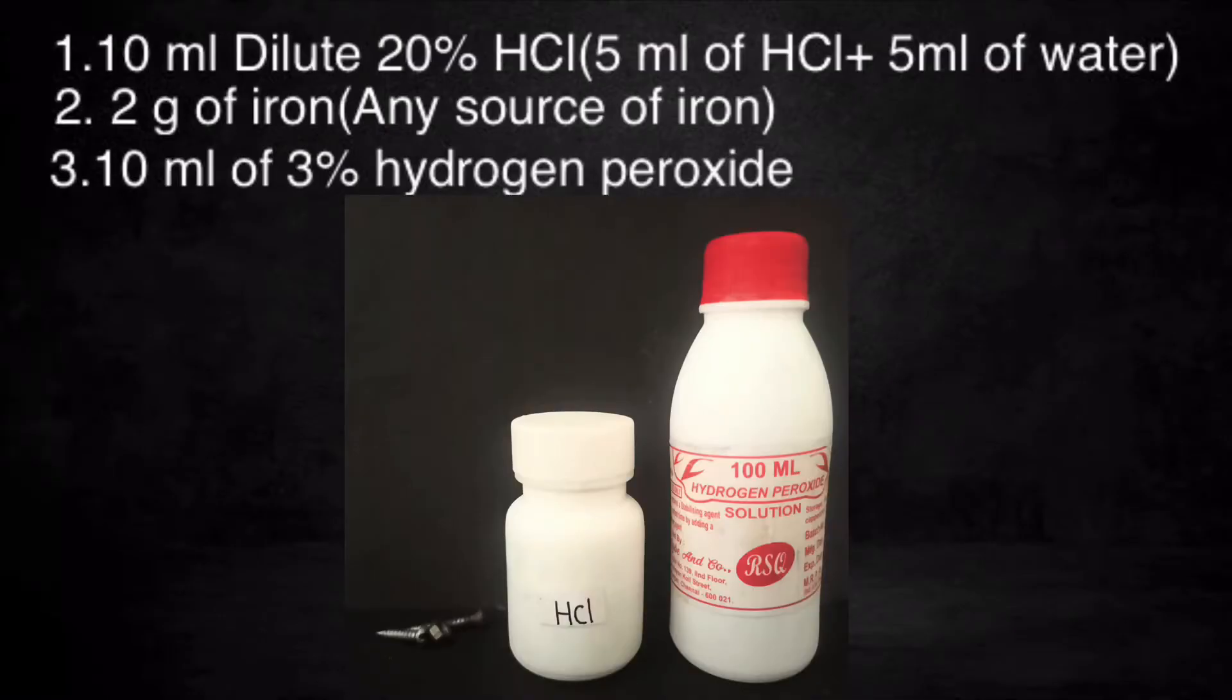The chemicals needed to make ferric chloride are 10 ml of dilute 20% hydrochloric acid, 2 grams of iron, and 10 ml of 3% hydrogen peroxide.